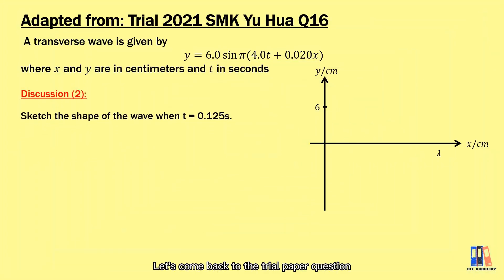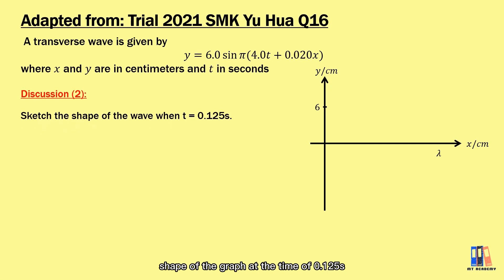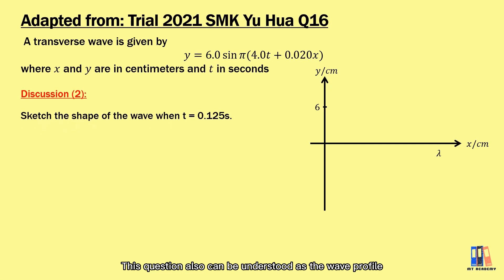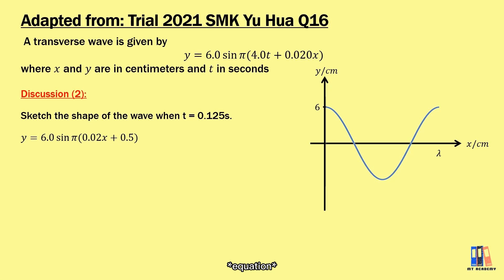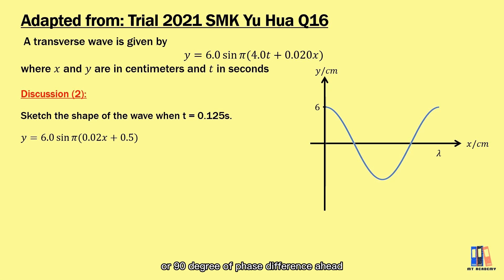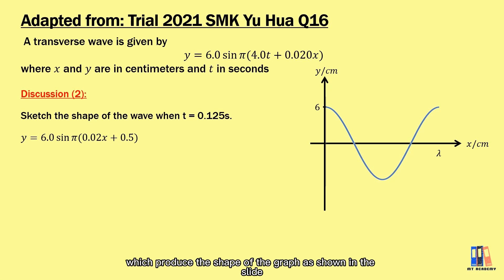Coming back to the trial paper question, we sketch the graph at time t = 0.125 s — this is the wave profile, or displacement-distance graph. Substituting the time value gives y = 6 sin(π(0.2x + 0.5)). For graph sketching, there is a phase difference of 0.5π radians (90 degrees) ahead, producing the shape of the graph as shown.